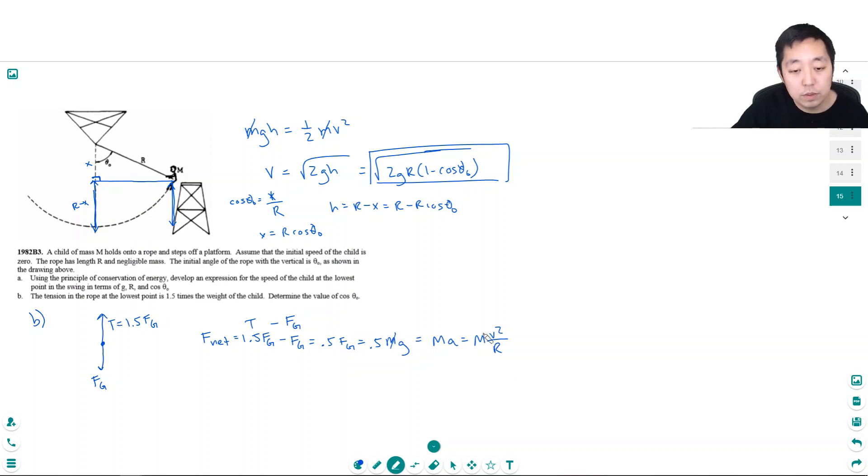The masses cancel. And what am I solving for again? Determine the value of cosine theta not. So I have this expression. 0.5 G is equal to v squared over r.